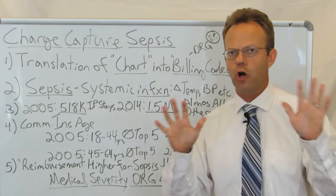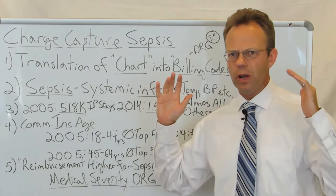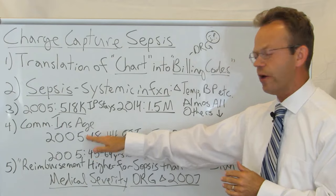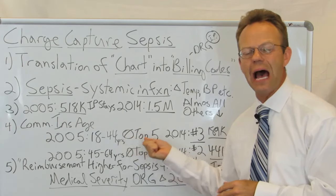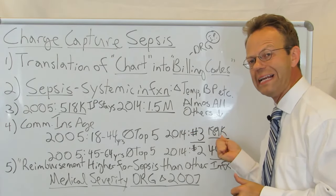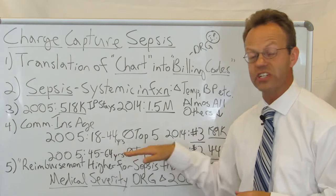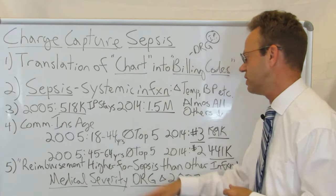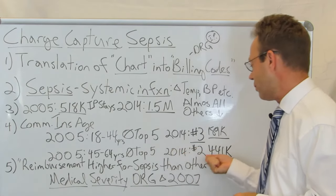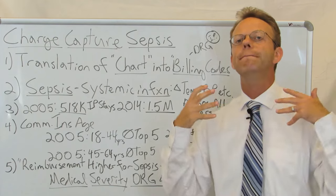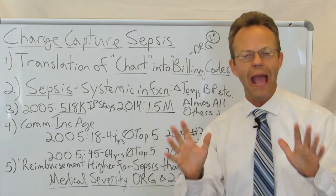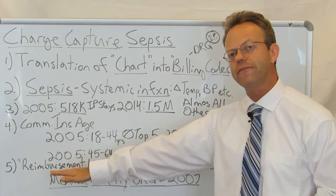For commercially-aged people: in 2005, for 18-to-44-year-olds, sepsis was not even in the top five diagnostic categories for inpatient stays. In 2014, it was number three with over 189,000 inpatient stays. In 2005, for 45-to-64-year-olds — older commercially insured folks — sepsis was also not in the top five. But in 2014, it was number two, with 441,000 inpatient stays — almost a half million — for something that wasn't even in the top five a few years prior. So what happened?